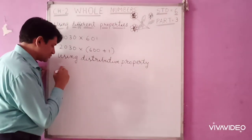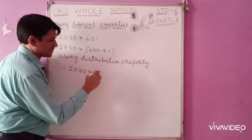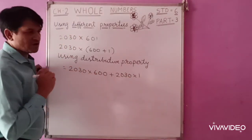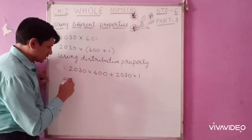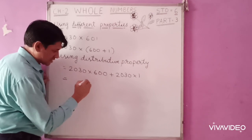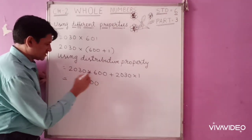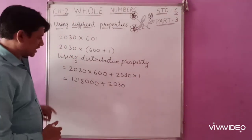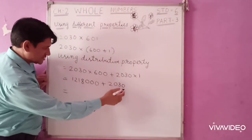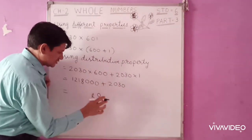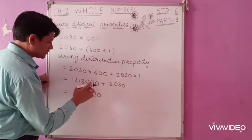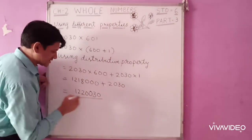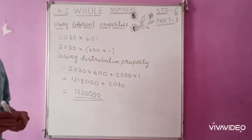Using the distributive property, we expand: 2030 multiplied by 600, plus 2030 multiplied by 1. We multiply 2030 by this number with both terms. So 2030 multiplied by 600 gives us three zeros, making it 1,218,000. Plus 2030 multiplied by 1 equals 2030. When you add these: 1,218,000 plus 2030 equals 1,220,030. So when you multiply this number directly you get the same answer.